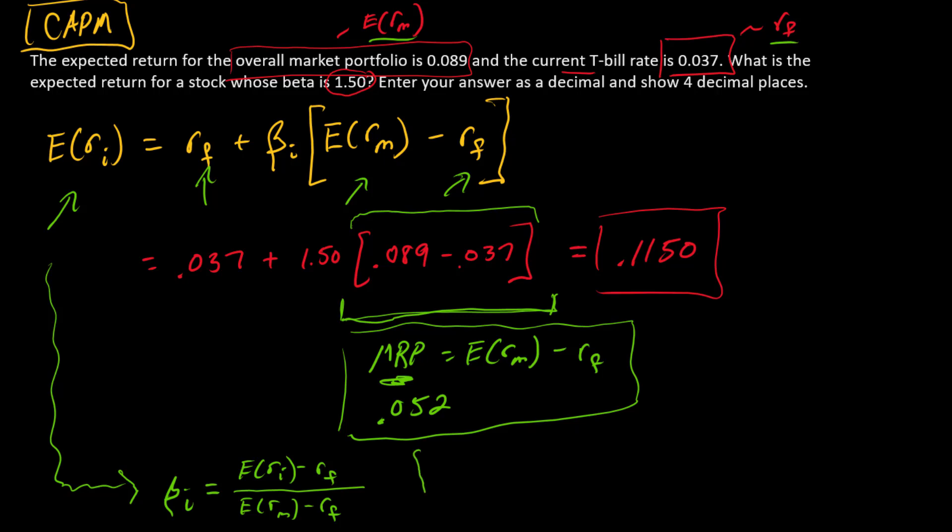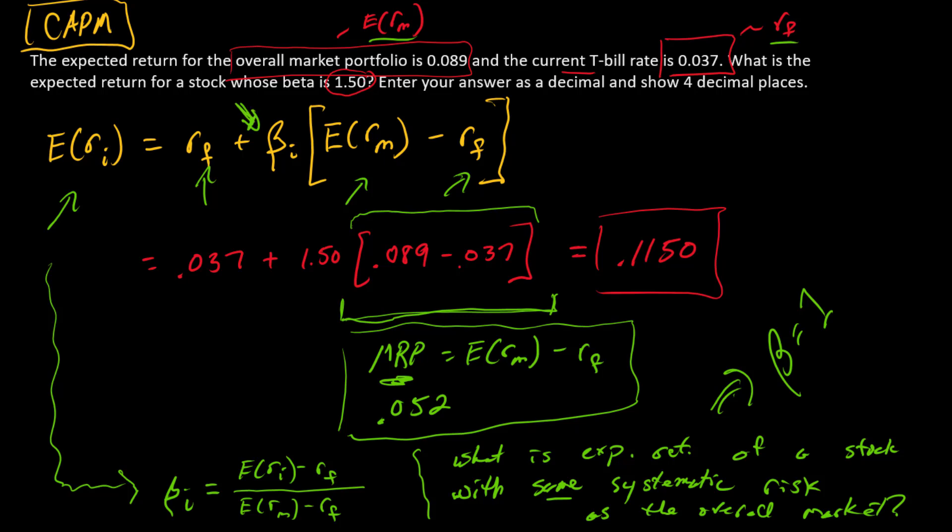Another variation of this is I might say something like, what is expected return of a stock with the same systematic risk as the overall market? What's the expected return of a stock with the same systematic risk of the overall market? Well, this same systematic risk of the overall market, that's a clue that the beta for that stock is what? The beta for that stock is 1. So if beta is 1, you could go back in and substitute beta of 1 here. And what you'll find is the expected return for the stock is the same thing as the expected return for the market.